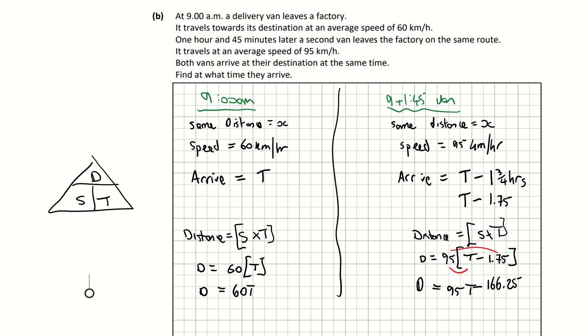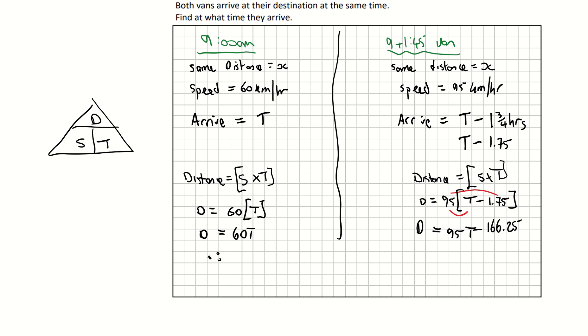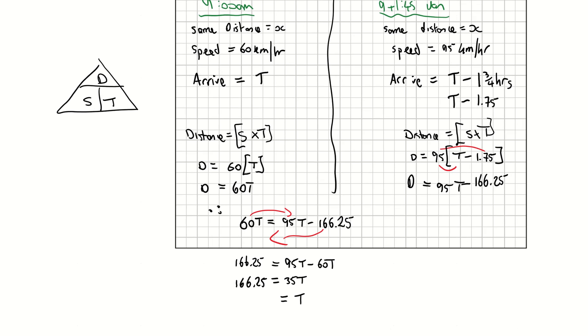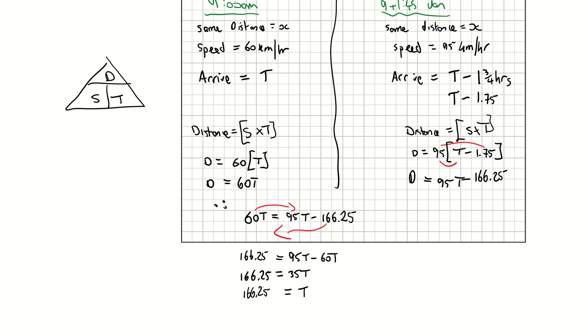Remember that they're both traveling the same distance. So that means, therefore, that both of these are equal to each other because they are traveling the same. So that's become 60 T is equal to 95 T minus 166.25. And a little bit of algebra now, putting T's on one side and constants on the other. I'm going to subtract 60 T from both sides. So 95 T minus 60 T and I'm going to add 166.25 to both sides. Taking 60 T away from 95 T is giving me 35 T. And to get T then on its own, I'm going to divide 166.25 by 35.